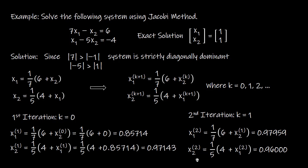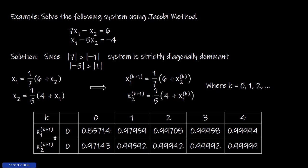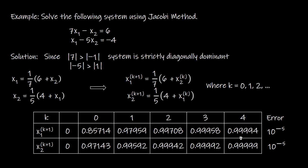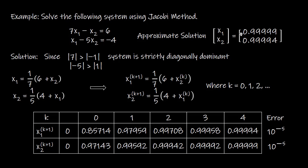We continue this iterative procedure to get the third, fourth, and fifth approximate solutions. In the table, the fifth approximate solution of X1 is computed as 0.99994 and the fifth approximate solution of X2 is 0.99999. Since the exact solution is X1 = 1 and X2 = 1, the error at the fifth iteration is on the order of 10^(−5), which is very small. Hence we take X1 ≈ 0.99994 and X2 ≈ 0.99999 as the required approximate solution.